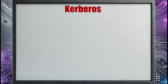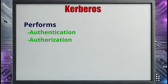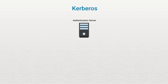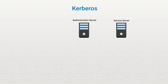EAP-TLS is used mostly by wireless vendors and is one of the most secure EAP standards available. The next authentication protocol is Kerberos. Kerberos performs both authentication and authorization for resources, using tickets to identify authenticated users or devices. It has several important components: an authentication server (AS) used to authenticate users and computers; a service server that holds resources such as a shared printer, file, or network resource with controlled access; and a ticket-granting server. In some implementations, the authentication server and ticket-granting server are combined into a single entity.